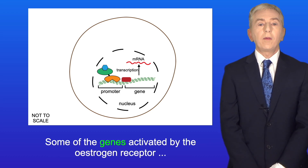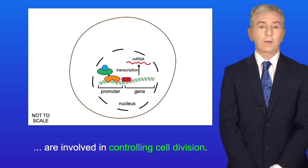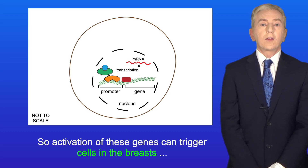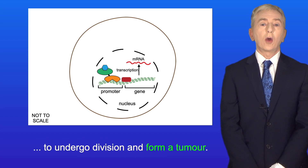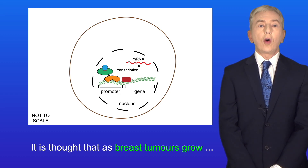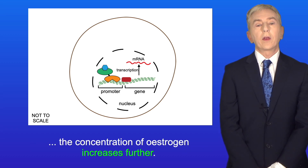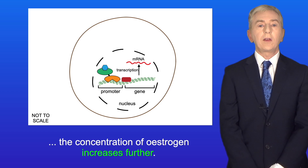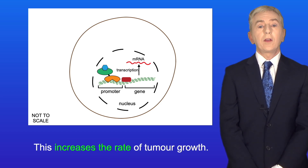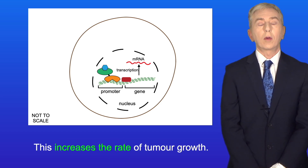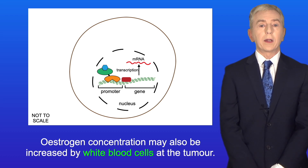Some of the genes activated by the oestrogen receptor are involved in controlling cell division, so activation of these genes can trigger cells in the breasts to undergo division and form a tumor. As breast tumors grow, the concentration of oestrogen is thought to increase further, which increases the rate of tumor growth. Oestrogen concentration may also be increased by white blood cells at the tumor.